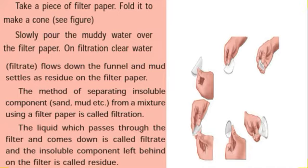Filtration: We use filter paper to remove finer impurities. Take a piece of filter paper and fold it to make a cone. Slowly pour the muddy water over the filter paper. On filtration, clear water flows down the funnel and the mud settles as residue on the filter paper. The liquid which passes through and comes down is called filtrate, and the insoluble component left behind on the filter paper is called residue.